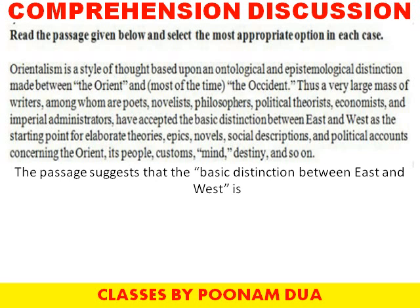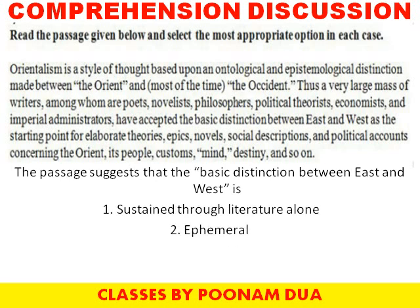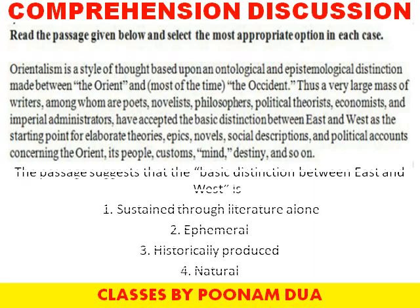Now let's look at the related question. The passage suggests that the basic distinction between East and West is: option one — sustained through literature alone. This option can be cut because in the above paragraph we are not talking only about literature; we are also talking about politics and economy. Option two — ephemeral. Ephemeral means something which is very short-lived, existing only briefly. So Orientalism's brief existence is not implied here, so this option also gets cut.